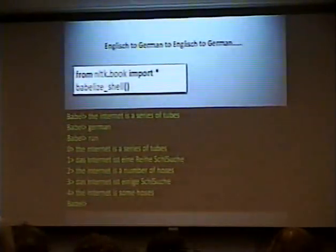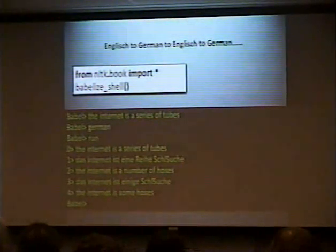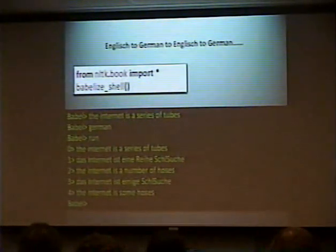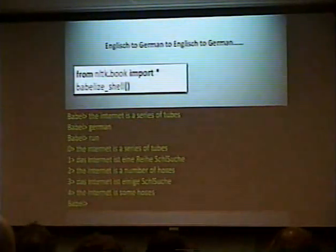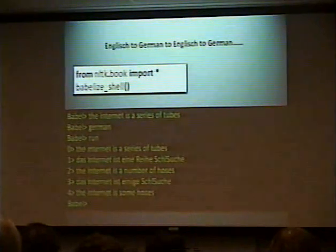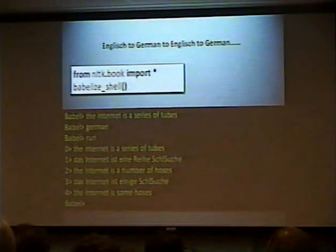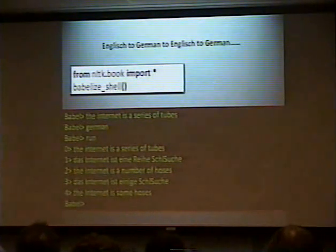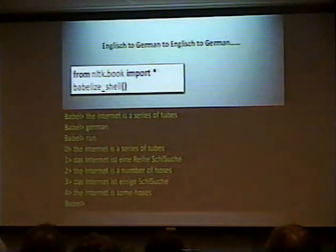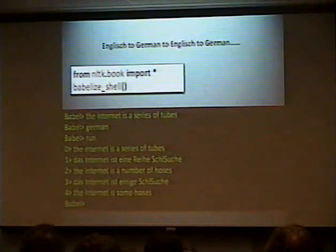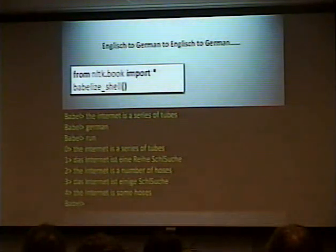We're going to look at that same example through the NLTK interface using babelize_shell. You import from nltk.book — you need to get the book corpus from the downloader — import everything, then run the function babelize_shell. You type in a phrase in English, type in a language, then type 'run'. It'll start translating back and forth. I started with 'the internet is a series of tubes', and the next English one is 'the internet is a number of hoses', and finally finishes with 'the internet is some hoses'.